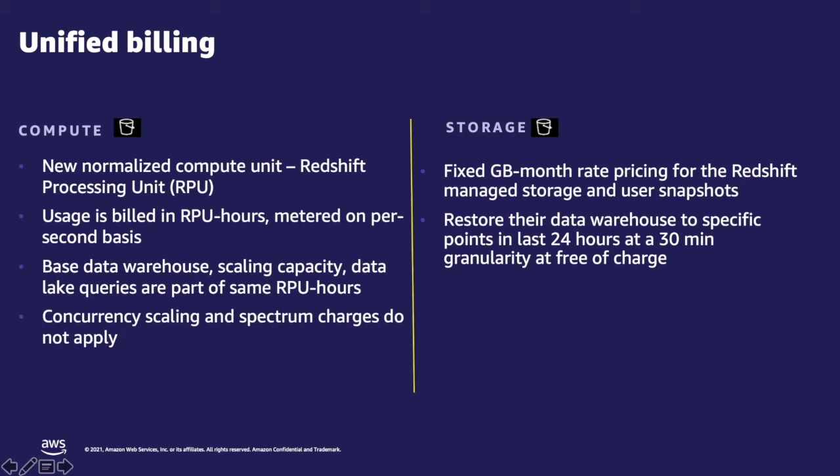Comprehensive security capabilities are included, and you do not pay separately for concurrency scaling or to query data in S3 using Redshift Spectrum, because it is part of the RPU calculation. The RPU itself can scale up or down based on workloads. Amazon Redshift Serverless automatically provisions and scales resources up or down based on workload variability to meet unpredictable demands, so you don't have to worry about over-provisioning or under-provisioning resources.